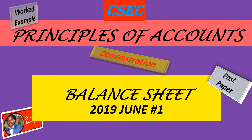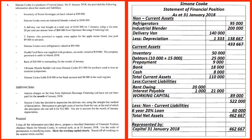Today we are going to demonstrate how to work on a balance sheet question in an exam. First, you read what is required: using all the information provided, prepare a classified statement of financial position (balance sheet) for Pauline Cook in vertical style as at 31st January 2018, using the order of permanence in classifying assets.